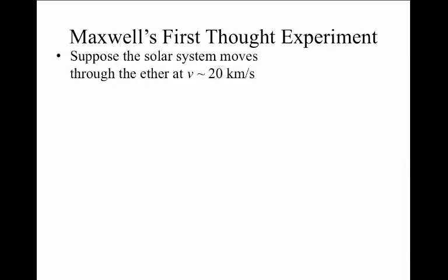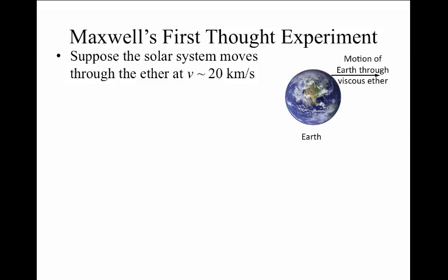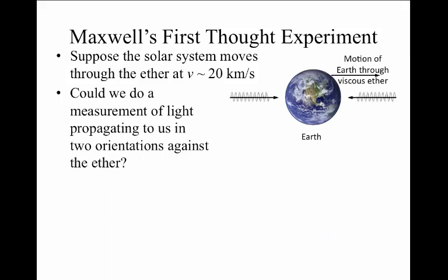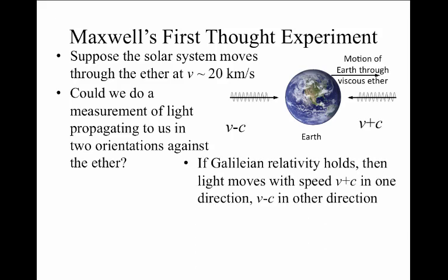We again suppose that the solar system moves at approximately the same speed as Earth around the sun, 20 kilometers per second. If light would approach the Earth from upstream or downstream in the ether, it would slightly shift in speed because of the Galilean addition of velocities relative to the ether. Things coming from upwind would be moving at speed v plus c relative to Earth, and things from downwind would be moving at speed v minus c.